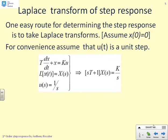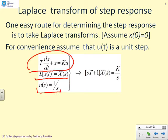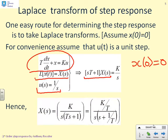Starting from τ dx/dt + x = ku, taking the Laplace transform of dx/dt gives sX(s), assuming zero initial conditions. The left-hand side becomes (τs + 1)·X(s), and the right-hand side becomes k/s. Rearranging to solve for X(s) gives X(s) = (K/τ) / [s·(s + 1/τ)]. We then apply partial fractions: the denominator has two simple factors, s and (s + 1/τ), giving residues c1 = K over s and c2 = −K over (s + 1/τ).